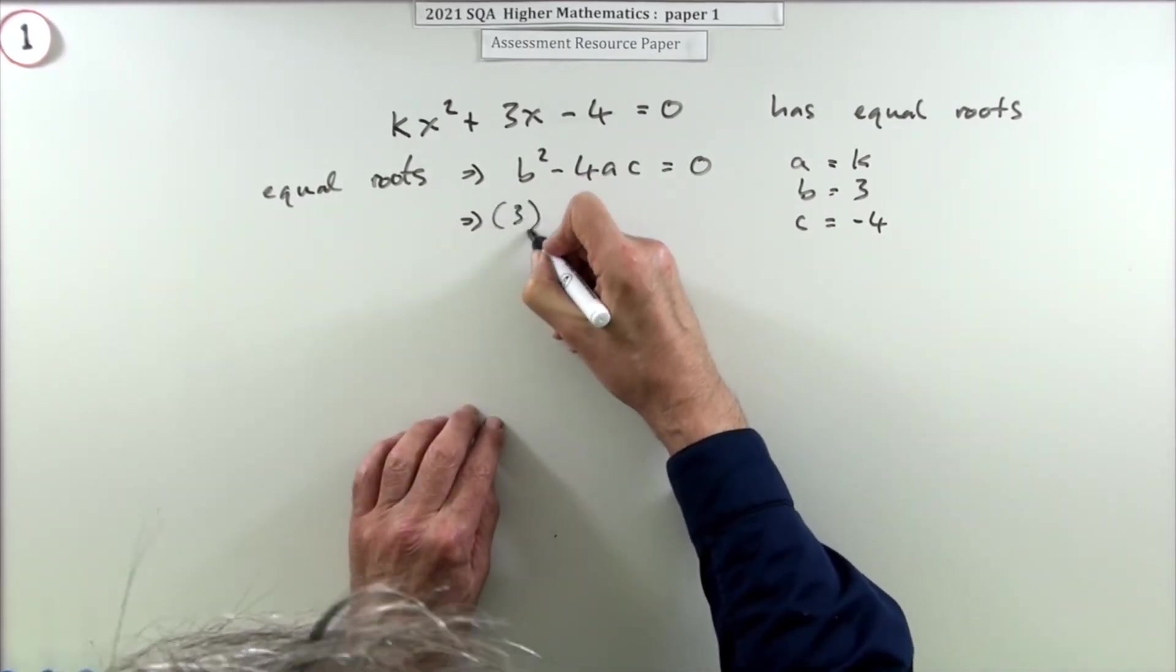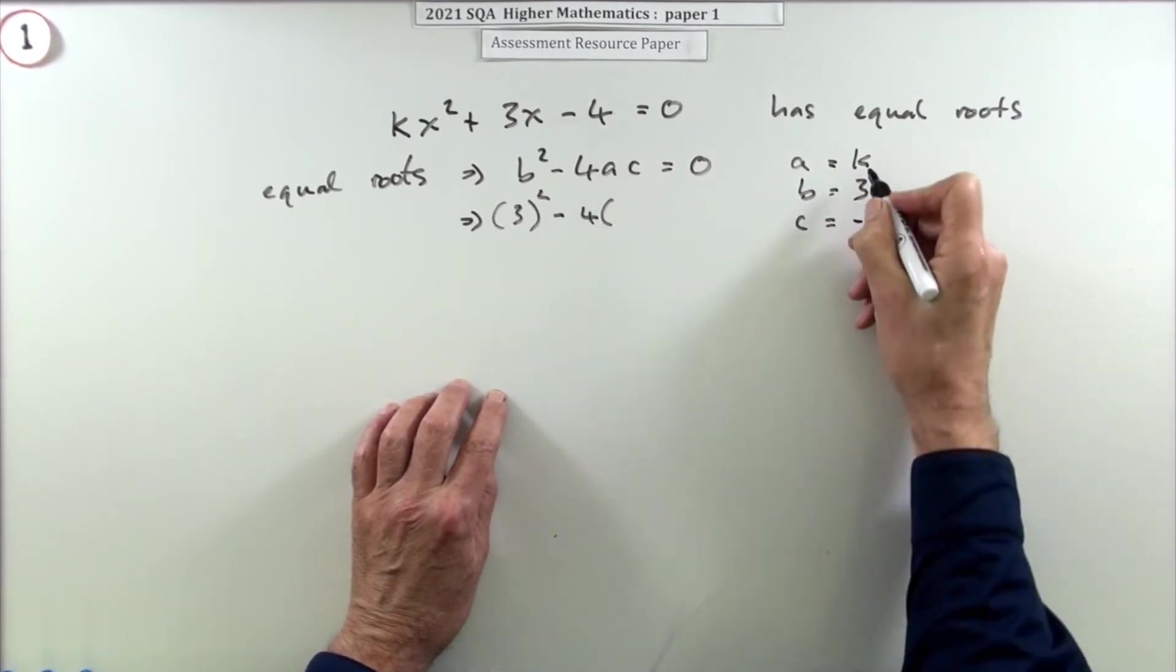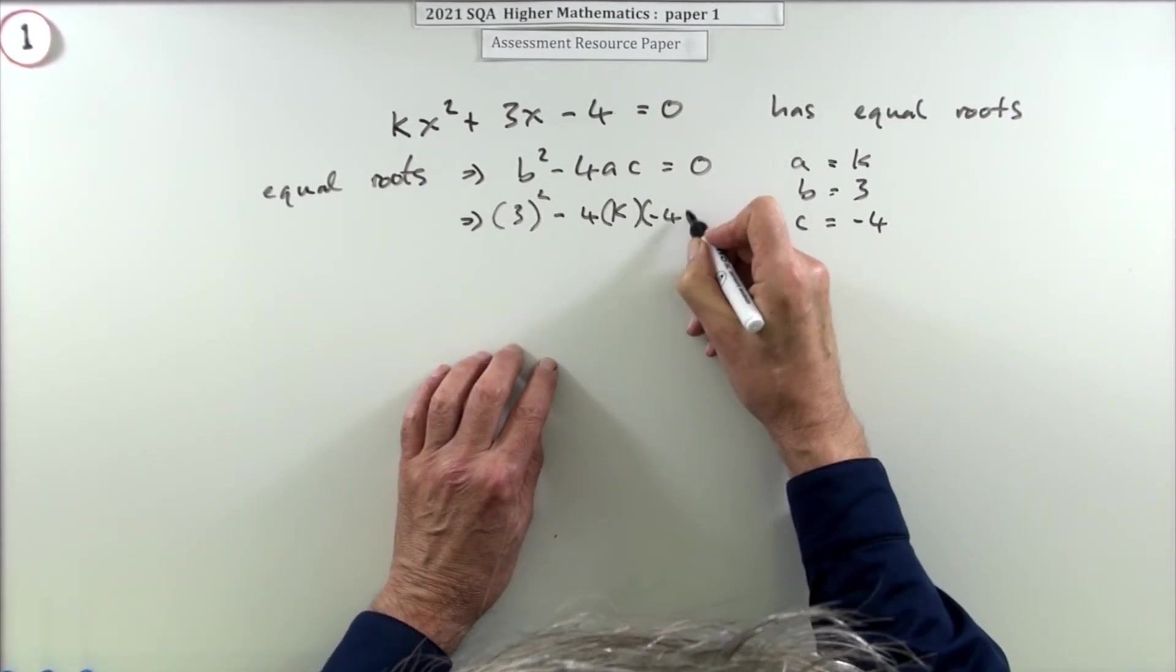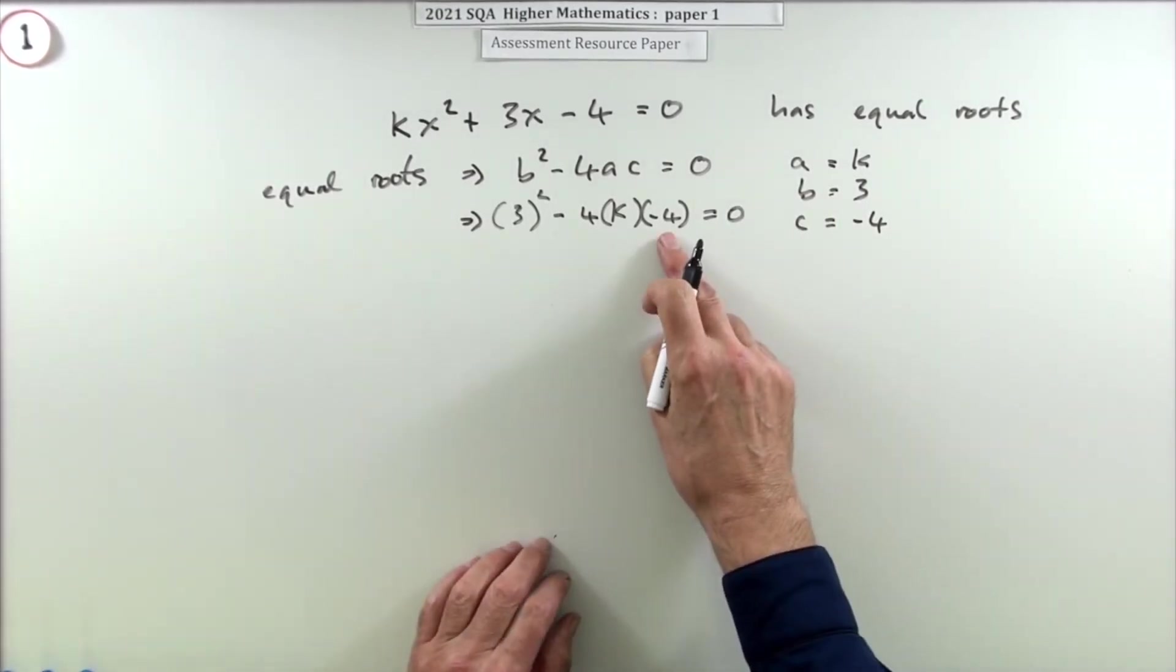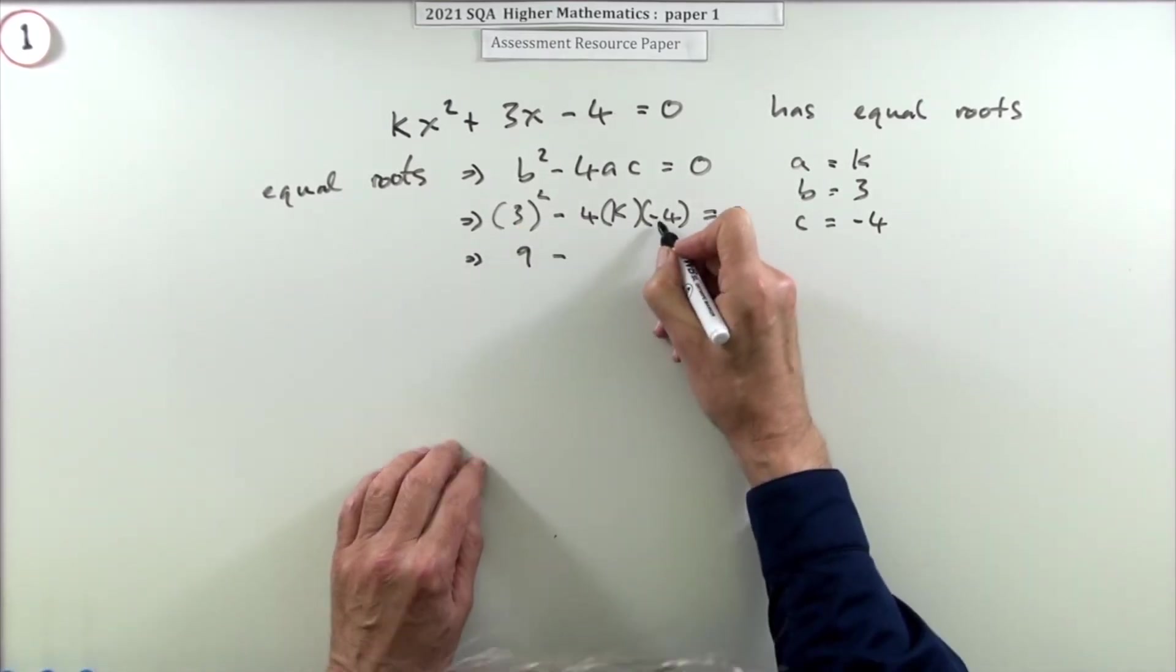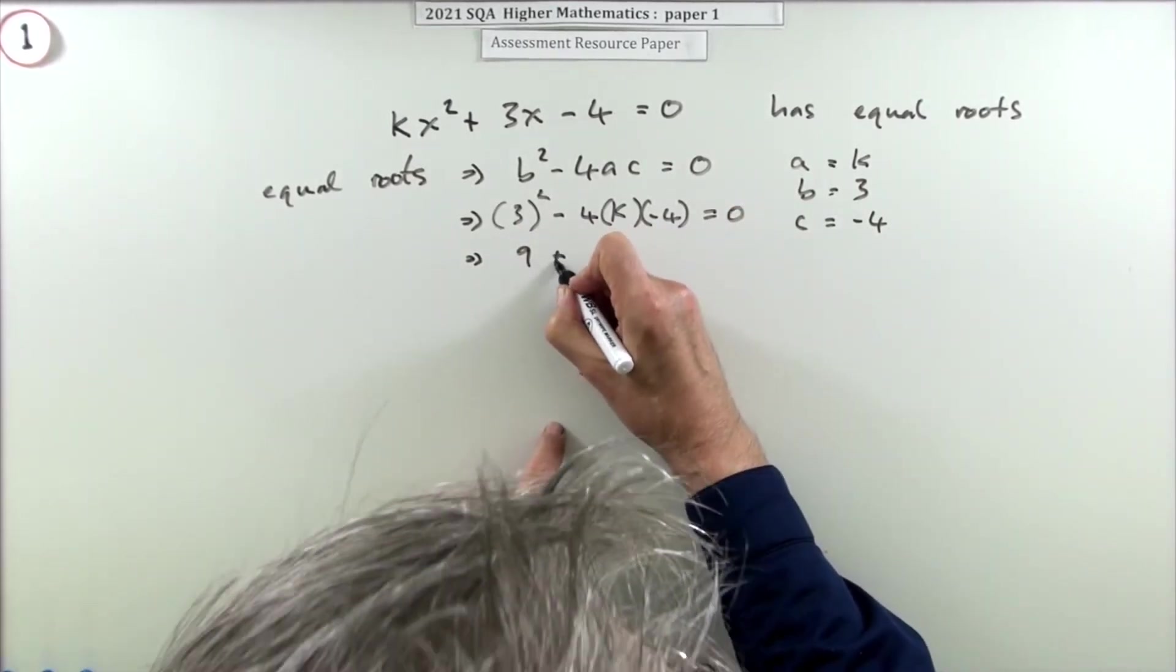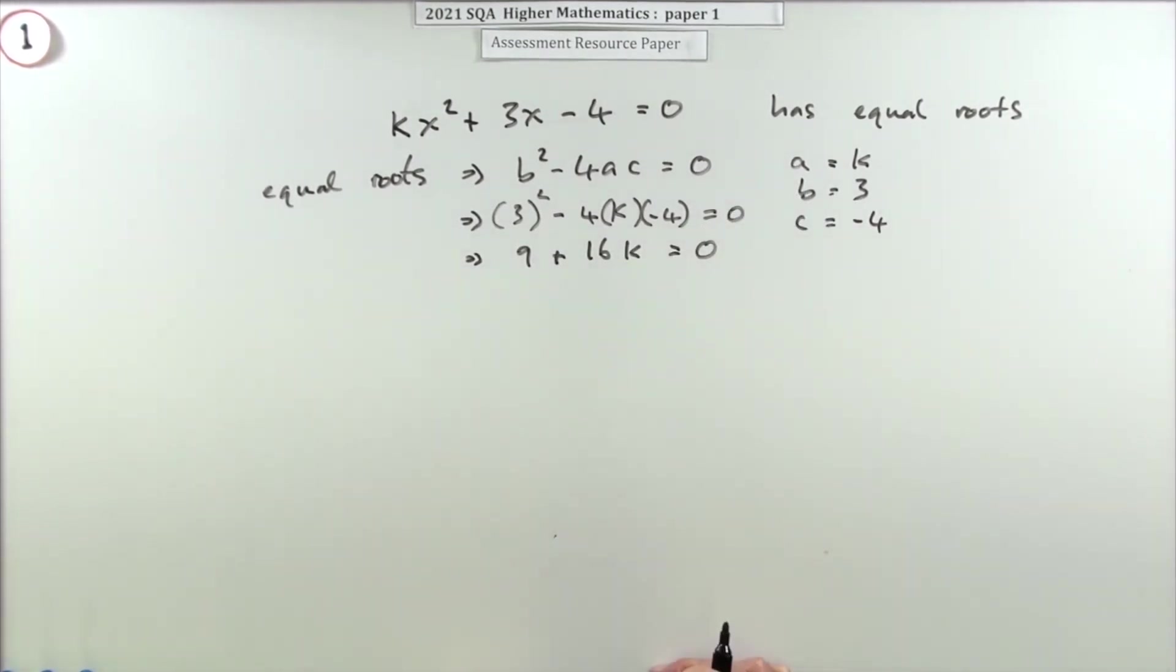Now popping them in would give you - I'll put them in a wee placeholder there. Pop them in there: square b, 4 times a was k, and c was -4. Put them in the brackets, or not as you wish. You'd have to put the -4 in a bracket though.